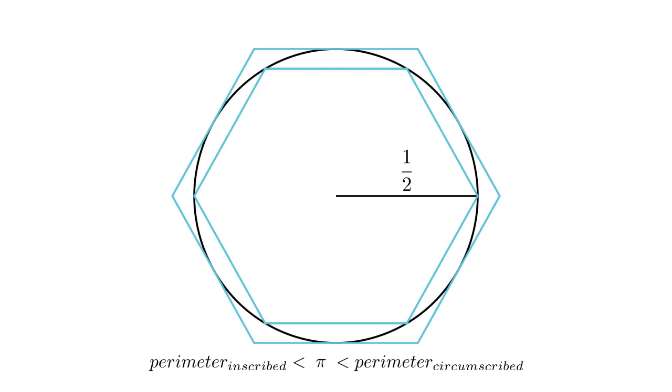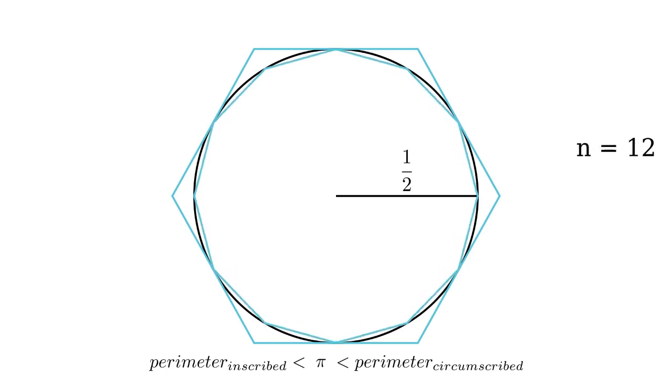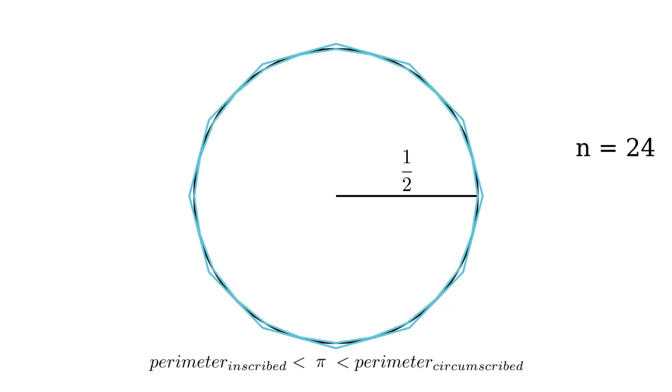And so a hexagon is the case for n equals 6. But we can change to n equals 12, draw a 12-sided shape on the inside and the outside. And then we can switch to n equals 24 and draw a 24-sided shape on the inside and the outside. And our bounds will always hold. As we increase n, they'll get closer and closer to each other. So we'll get a better and better approximation of pi.